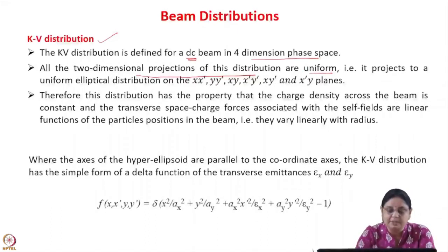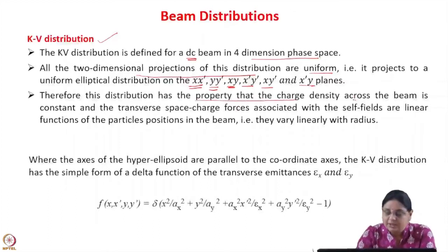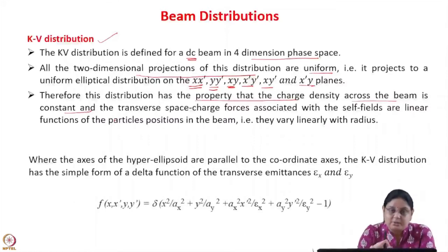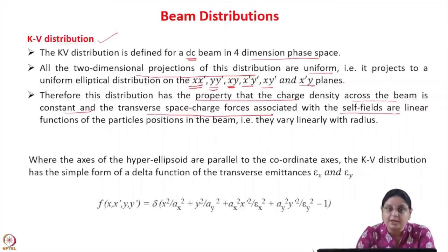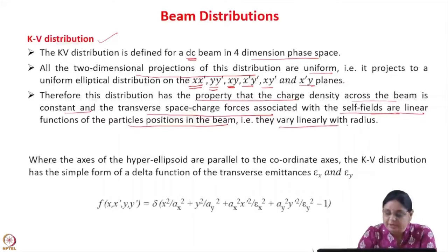Taking any 2-dimensional projection — that means x, x-prime; y, y-prime; x, y; x-prime, y-prime; x, y-prime; or x-prime, y — all 2-dimensional projections are uniform. Therefore this distribution has the property that the charge density across the beam is constant. Since the 2-dimensional projections are constant, the charge density is constant in any 2-dimensional phase space, and the transverse space charge forces associated with the self-fields are linear. If you have a uniform charge distribution in 2-dimensional space, the force due to that is linear. The forces associated with the self-fields are linear functions of the particle's position in the beam — that is, they vary linearly with radius.